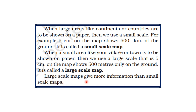Large scale maps give more information than small scale maps. Because when a large area is shown on a small sheet of paper, it is not possible to show detailed features of that area. But if a small area is represented on the same sheet of paper, all the features available in that area can be easily shown. So we can get detailed information through large scale maps.